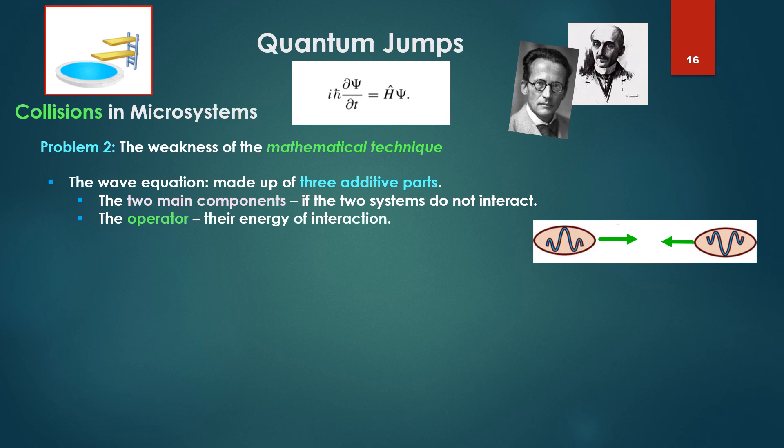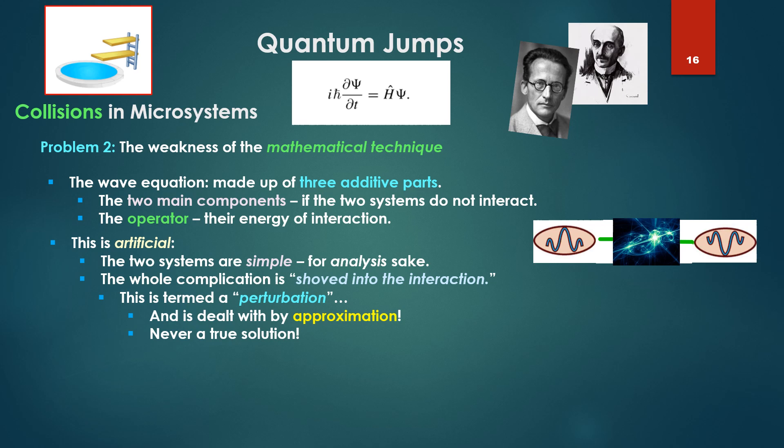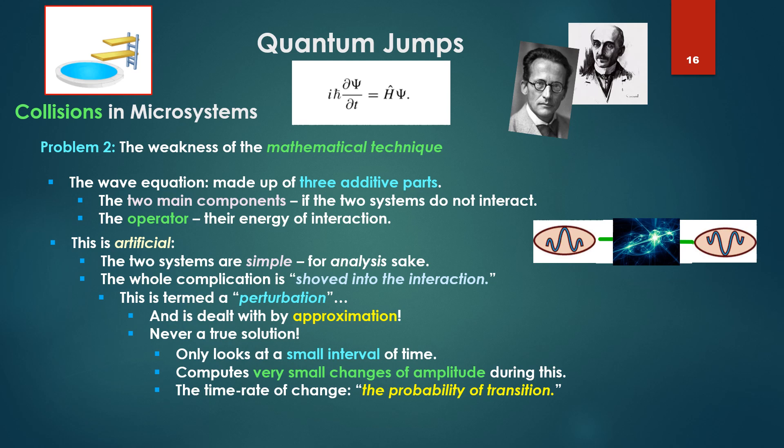Problem number two is the weakness of the mathematical technique. The wave equation is made up of three additive parts: the two main components if the systems do not interact, and the operator, their energy of interaction of the two systems. This is artificial. The two systems are simple. For analysis sake, they're kept simple. The whole complication is shoved into the interaction. This is termed a perturbation, and it's dealt with by approximation, never a true solution. It only looks at a small interval of time, computes very small changes of amplitude during this, and the time rate of change is termed the probability of transition.